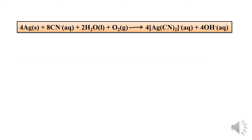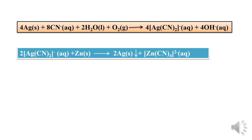Here is one more example with silver — Ag stands for silver. Similarly, zinc acts as a reducing agent and finally silver metal is obtained. The name of this process is the MacArthur-Forest cyanide process.